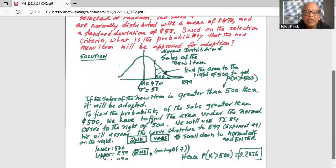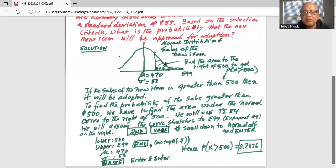So in order to find the area, we press the second key in the calculator, then the VARS key in the calculator, and then scroll down to normalcdf. And when we see normalcdf and the cursor is aligned with normalcdf, then we'll hit enter. And the following screen opens up.